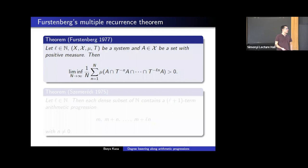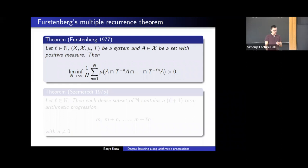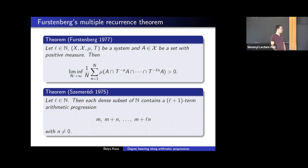Furstenberg proved that if we have a system and a set of positive measure, then these intersections have positive measure on average. He used this result to give an alternative proof of Szemerédi's theorem on arithmetic progressions, which says that each subset of the natural numbers with positive upper density contains an arithmetic progression of arbitrary length.